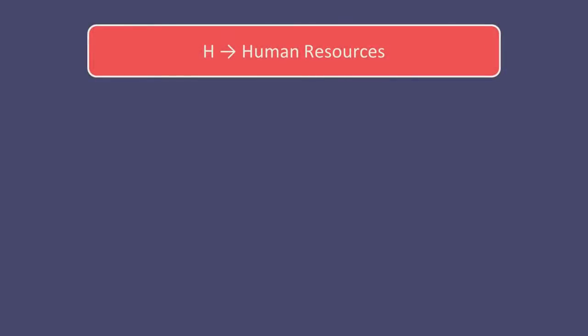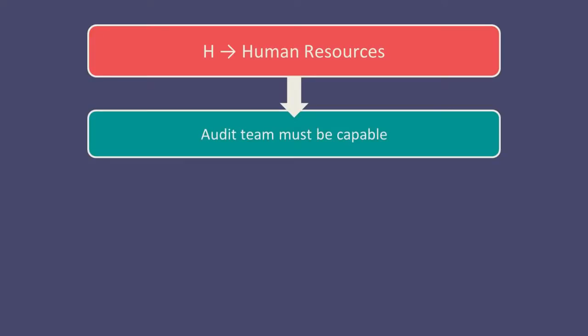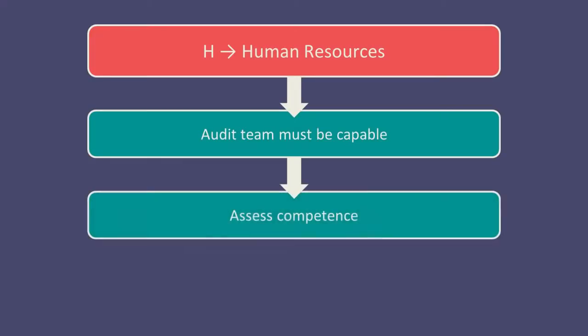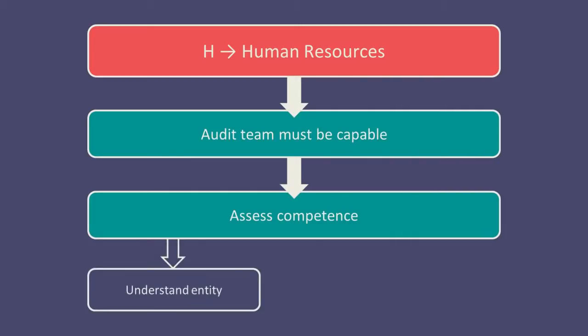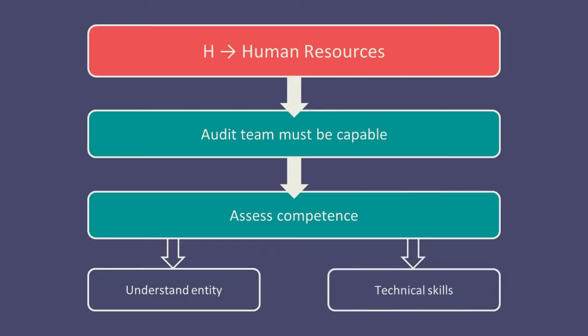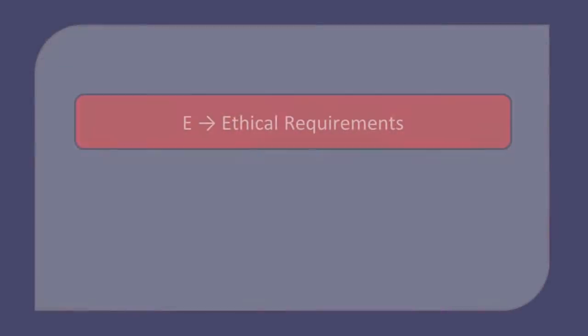The H is for human resources. The audit firm, and in particular the engagement partner who is responsible for the client, should ensure that their audit team is capable. They should assess the competence of the team members to ensure the audit is performed at an appropriate standard. They should ensure the audit team has sound knowledge of the client being audited and therefore understands the entity and its environment. However, they must also ensure the technical skills within the audit team are enough to reach appropriate conclusions.